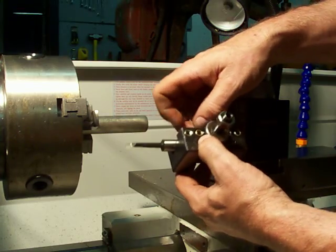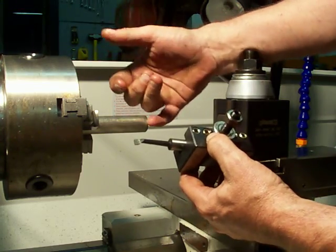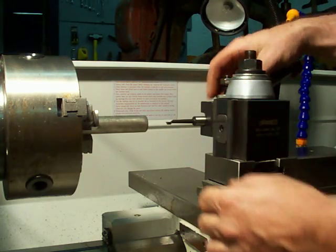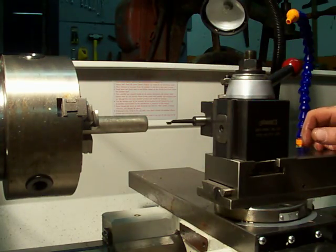So in this case, I'm using a 5-8ths boring bar to bore up my ID. I place this on the back dovetail. I've got my height set, my boring bar set, I'm ready to go to make my cut.